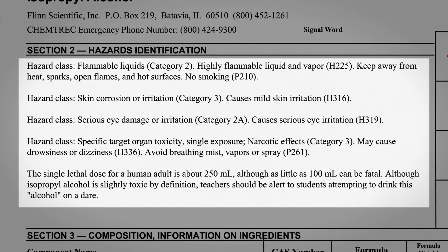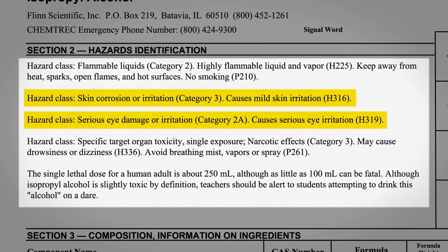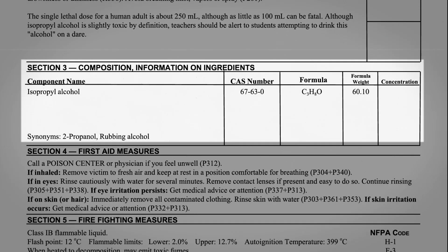Hazards two and three: isopropyl alcohol may cause both mild skin irritation and serious eye irritation. The last hazard class is that it could have narcotic effects — it may cause drowsiness or dizziness. Avoid breathing mist, vapors, or spray. A quick side note: drinking isopropyl alcohol could result in poisoning or even death, so don't confuse it with ethanol found in beer, wine, and liquor.